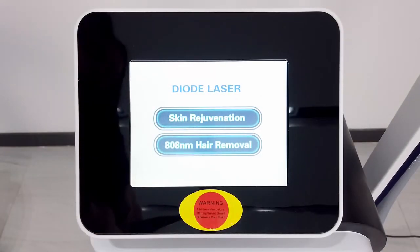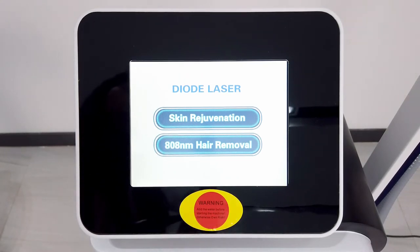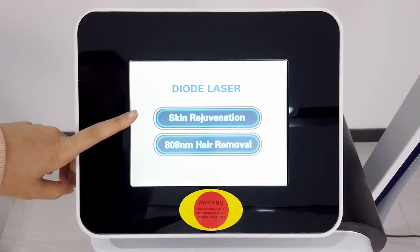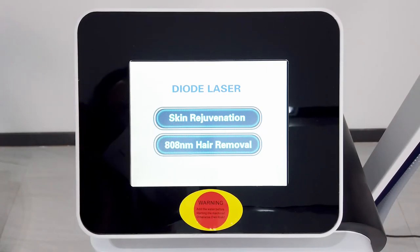When we turn on the machine, we need to wait about one minute so that the machine has time to warm up. We can see this machine has two systems: skin rejuvenation and hair removal. Now we'll check the hair removal system.